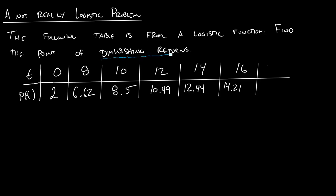And so the key with this problem is understanding what it means by diminishing returns. So what we're looking for is the point at which the derivative is the greatest. Alright? So when is the rate of increase the greatest?